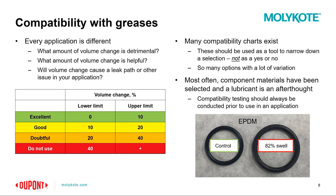Another thing worth highlighting that often gets overlooked is compatibility with greases. Looking at compatibility between greases and elastomers, for example: these are typically sealing applications where you might not be able to allow for shrinkage, or you might be able to allow for a little swell. There is a general good-versus-bad chart, but it really varies by specific application. If you're trying to seal, you definitely don't want your O-ring to shrink — and in fact, we do have products that intentionally swell certain elastomers depending on the requirement.